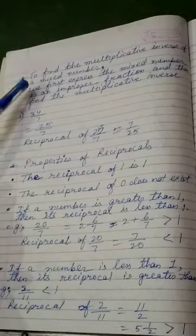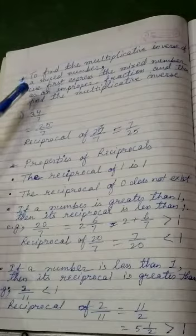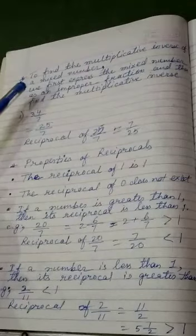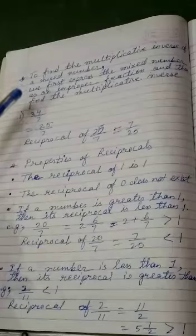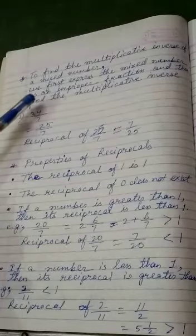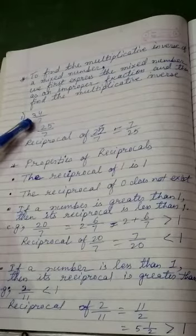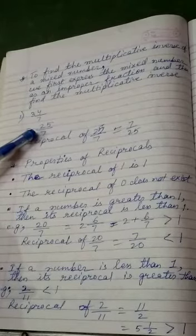Now, let us find out the multiplicative inverse of a mixed number. To find out the multiplicative inverse of a mixed number, we first express the mixed number as an improper fraction, means we will convert the mixed fraction into an improper fraction.